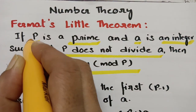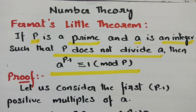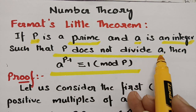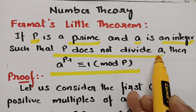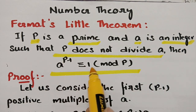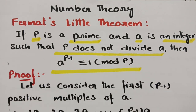Here, p is given as a prime number — that is the most important thing — and p does not divide a. Then a^(p−1) is congruent to 1 mod p.